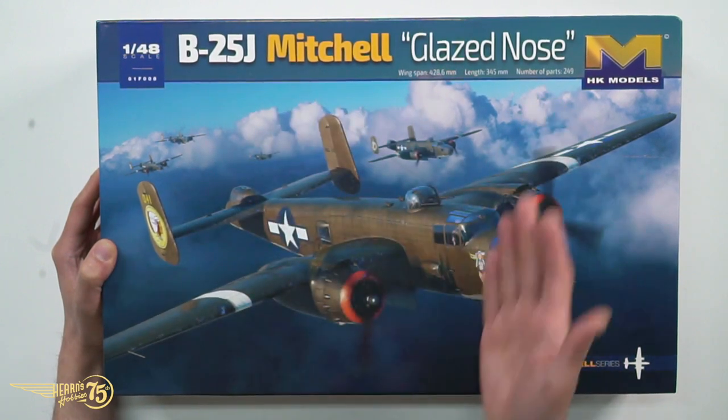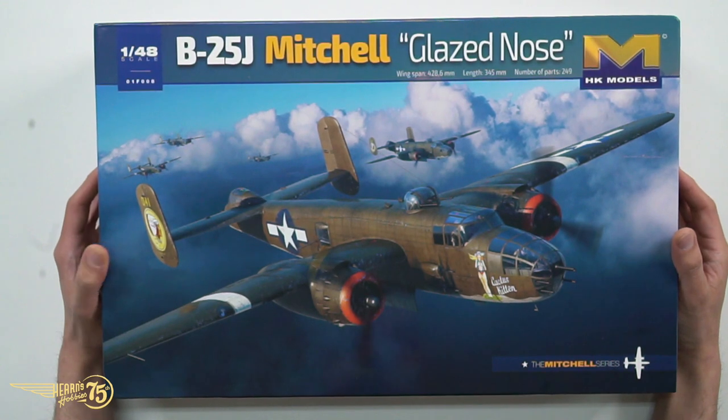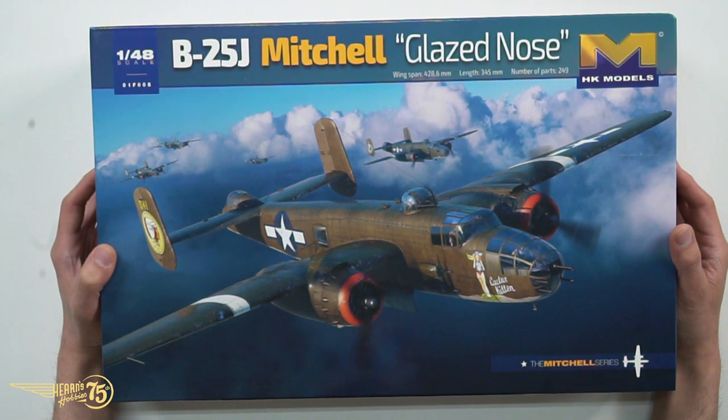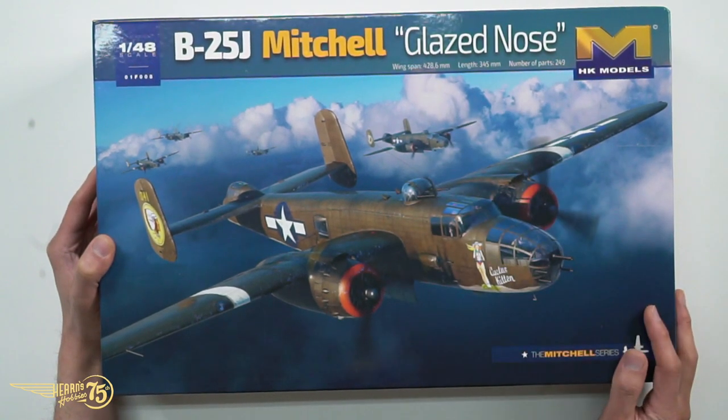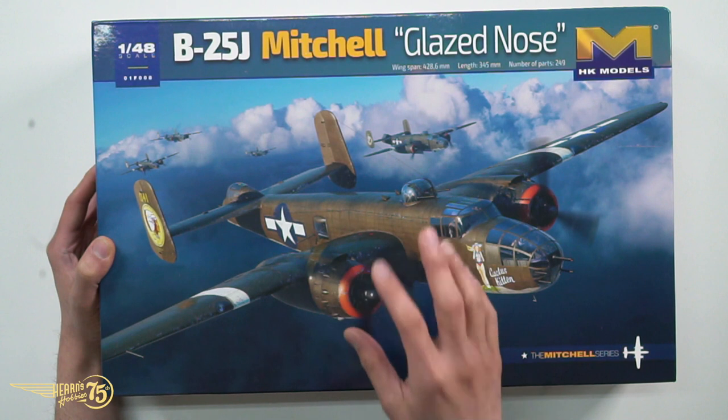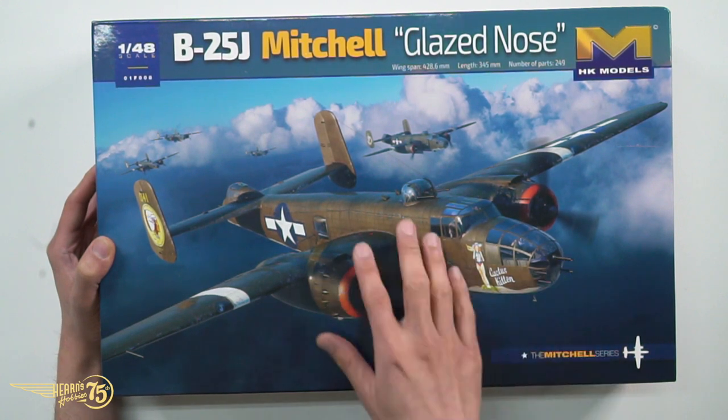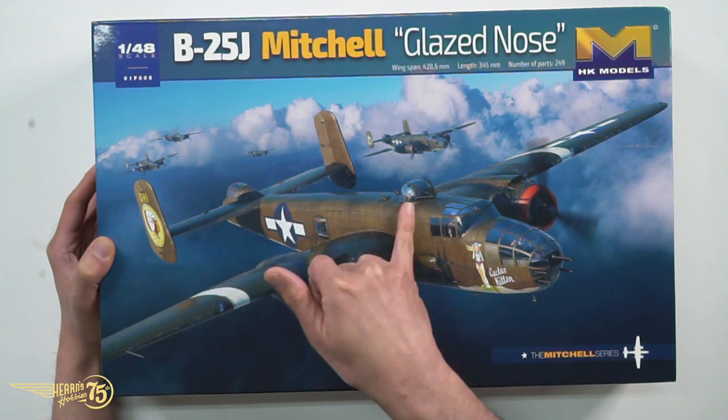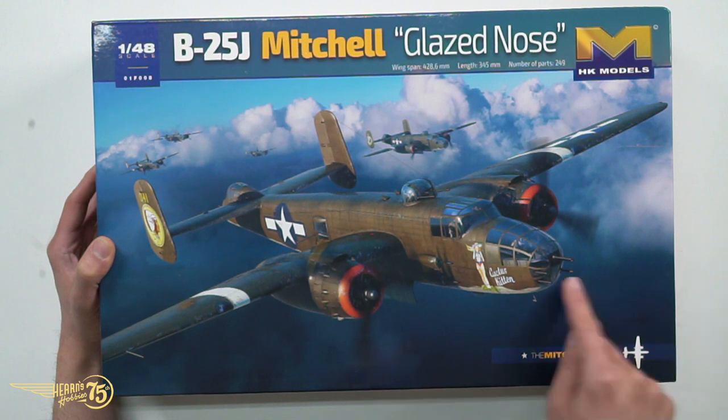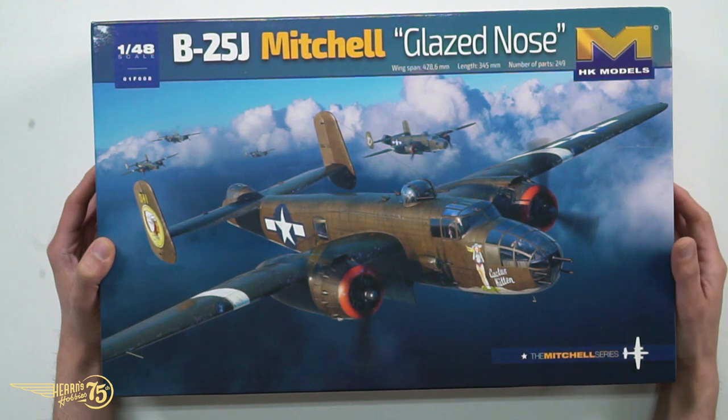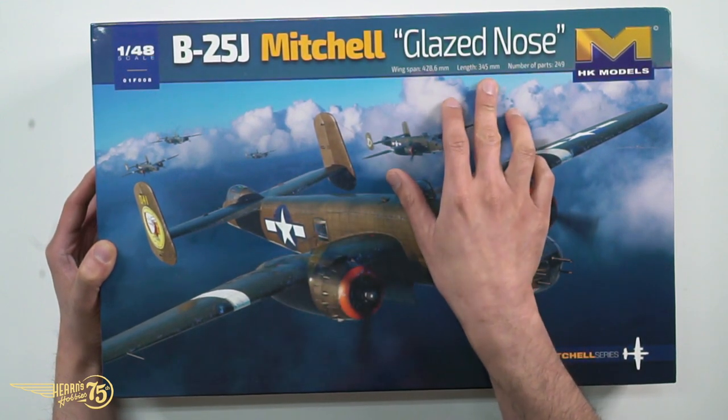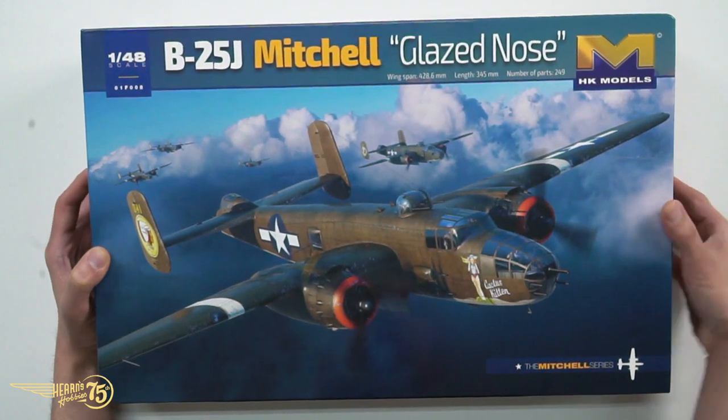The Mitchell, of course, which is this B-25, as it was known, was named after General Mitchell. And this is the glazed nose version. So the last version produced actually went back to its bomber configuration, but quite a few of them were modified again to strafing. So this has actually got a bomb bay and all of the self-defense weaponry, and then also the strafing eight guns on the front. We've got a wingspan of just over 40 centimeters and 34 centimeter length, and total number of parts, 249.